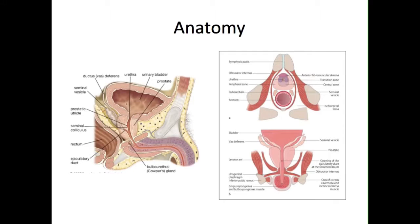The posterior part of the prostate gland can be palpated by digital rectal examination. A median groove, which divides the prostate into two lateral lobes, is usually palpable. However, this is not the case if there is advanced prostatic malignancy. There is also a median lobe, which is actually in the posterior part of the gland, above the opening of the two ejaculatory ducts that emerge from the ductus deferens.